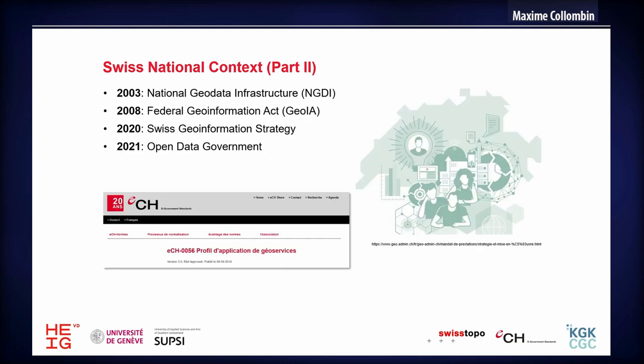About the timeline of the Swiss national context and the national data infrastructures, it was first initiated in 2003 by the Swiss government, followed by the Geoinformation Act in 2008, to which you can attach the eCH normalization. It stands for Profiles of Application and Web Services, and it is going to be part of our work to consider this standard. Then in 2020, there was the Swiss Geoinformation Strategy and the goal of producing open government data by 2021.